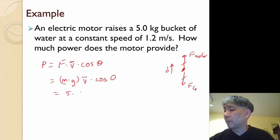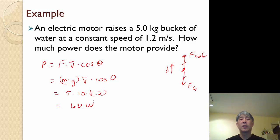Which turns out to be 5 times 10 times 1.2, and that gives me 60 watts. So that's how much power the motor provides. It's 60 watts to lift this 5 kilogram bucket at a constant speed of 1.2 meters per second. Thank you.